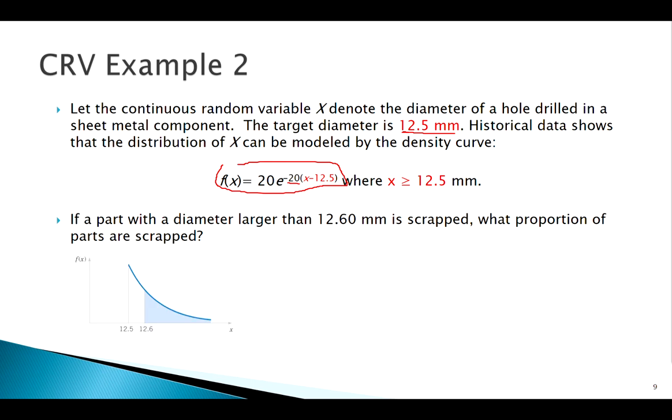Since we see that negative, we know it's going to be an exponential kind of shooting down. We want the proportion of parts that are scrapped, X greater than 12.6. I can't just look at that graph and estimate, so we're going to have to do this mathematically, analytically.